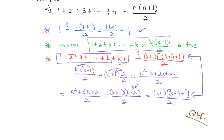We can say QED or use a solid box — we have proven this series. We proved the base case that it works for 1, assuming it works for k then we showed it works for k plus 1. By induction, 1 plus 2 plus 3 all the way down to n does in fact equal n times n plus 1 over 2. Start the base case, assume the k case, prove the k plus 1 case — that's how we prove something by induction.